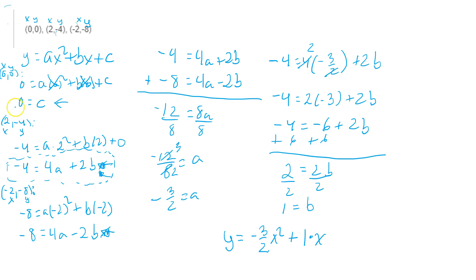Right here. You see c was equal to 0. You don't have to attach that. So you're using c equals 0. You're using a equals -3/2. And you're using 1 equals b to put those pieces together.